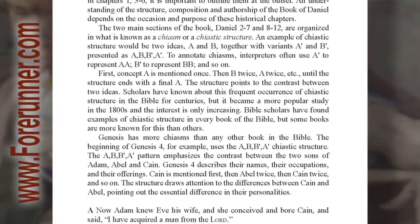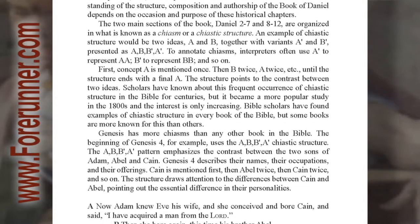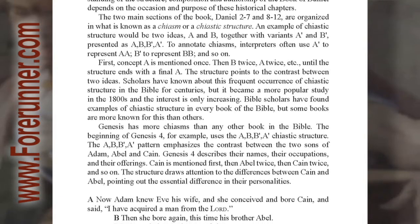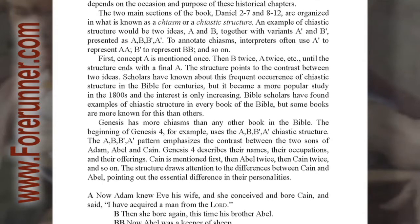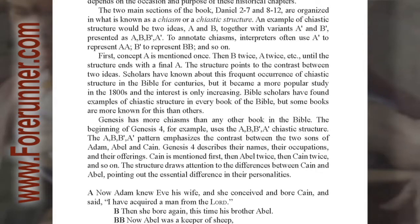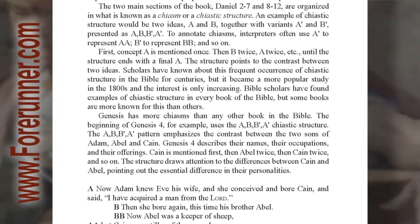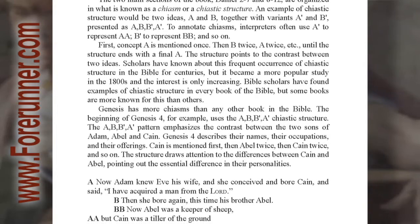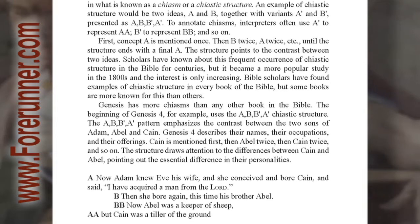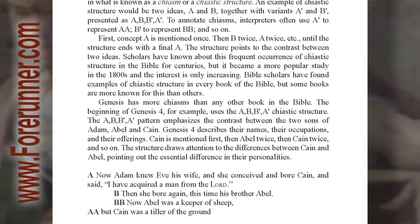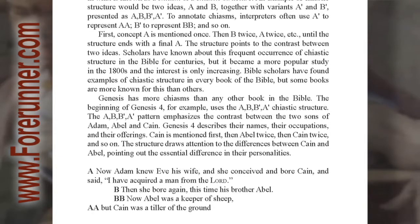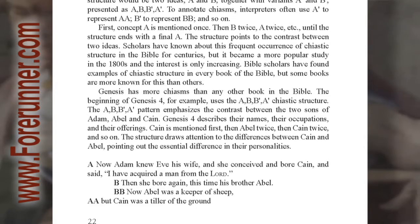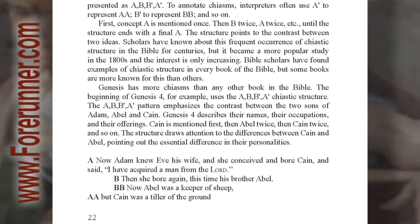The structure points to a contrast between two ideas. Scholars have known about this frequent occurrence of chiastic structure in the Bible for centuries, but it became a more popular study in the 1800s, and the interest is only increasing. Bible scholars have found examples of chiastic structure in every book of the Bible, but some books are more known for this than others. Genesis has more chiasms than any other book in the Bible. The beginning of Genesis 4, for example, uses the AB, B'-A' chiastic structure.